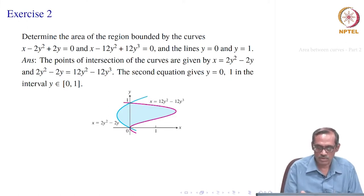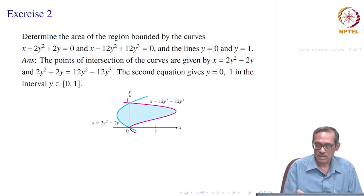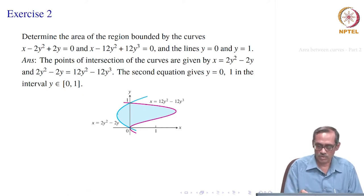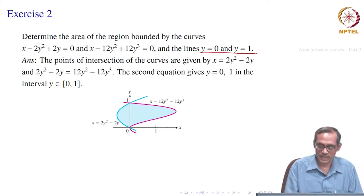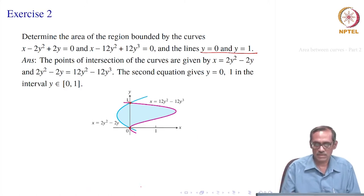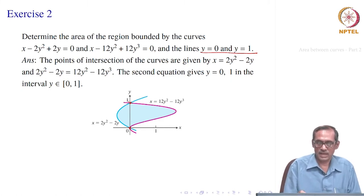If you plot them, x equal to 2y squared minus 2y is the curve on the left — the blue one — and the magenta one is x equal to 12y squared minus 12y cubed. We want to compute the area between them where y equal to 0 and y equal to 1 are exactly the points of intersection. In the upper half plane, that is the region we would be getting.